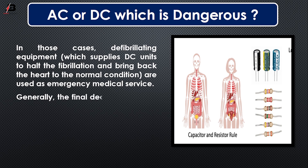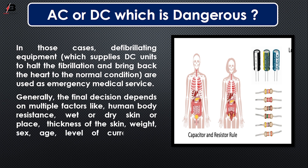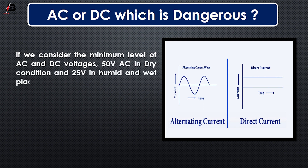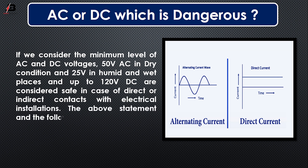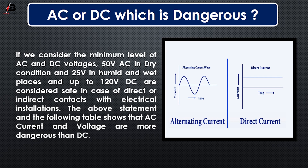Generally, the final decision depends on multiple factors like human body resistance, dry or wet skin, thickness of the skin, weight, sex, age, and level of current, voltage, and frequency. The minimum safe levels are 50V AC in dry conditions and 25V AC in humid or wet places, and up to 120V DC are considered safe for direct or indirect contact with electrical installations. The above statements show that AC current and voltage are more dangerous than DC.